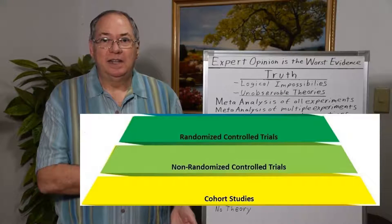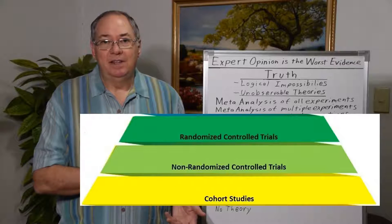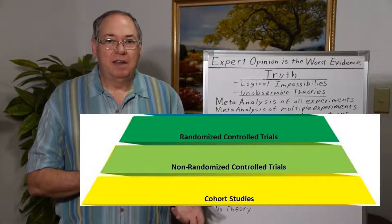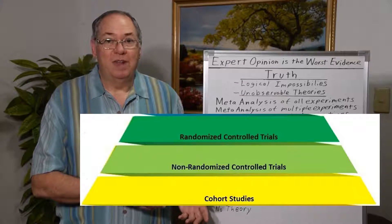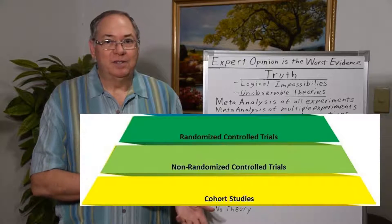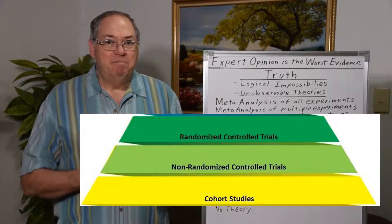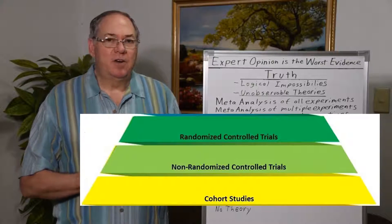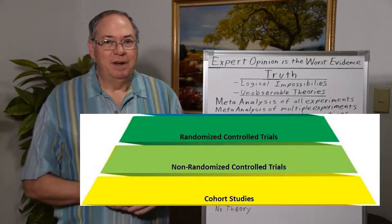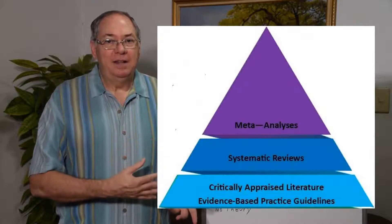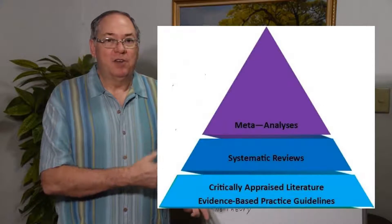Then you can have cohort studies where you follow large groups over time. And then you have the trials. Trials can have quality. You can have a drug trial with no placebo control, or you can have placebo control. You can have it randomized, or the doctors can know. Randomized controlled trials are the best variant. Then you can have a meta-analysis of all the trials to date, which gives you the ultimate scientific picture of the evidence.